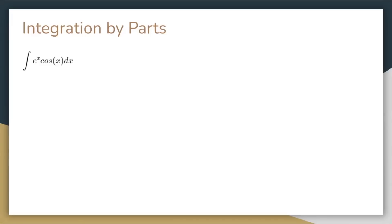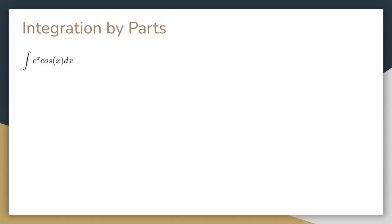Sometimes you need to use integration by parts multiple times. For the integral of e to the x cosine x dx, the derivative of e to the x is e to the x, and the integral of cosine x is sine x, so the integral becomes e to the x sine x minus the integral of e to the x sine x dx. Then we can use integration by parts again, so the integral of e to the x sine x dx becomes negative e to the x cosine x minus the integral of negative e to the x cosine x dx. After simplifying, we notice that the integral of e to the x cosine x dx appears on both sides, so we can add it to both sides and divide by 2 to get our final answer.